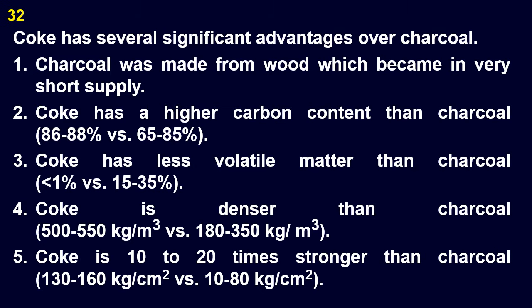First, charcoal was made from wood, which became in very short supply. Second, coke has a higher carbon content than charcoal — 86–88% versus 65–85%. Third, coke has less volatile matter than charcoal — less than 1% versus 15–35%. Fourth, coke is denser than charcoal — 500–550 kg per cubic meter versus 180–350 kg per cubic meter. Fifth, coke is 10–20 times stronger than charcoal — 130–160 kg per square cm versus 10–80. This last factor is very important in a blast furnace, since coke can resist the crushing weight of the iron ore and limestone and allow for the flow of oxygen.